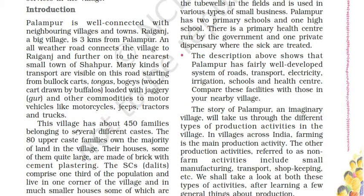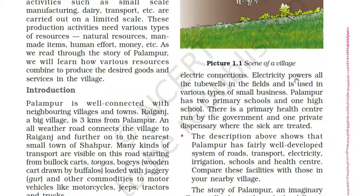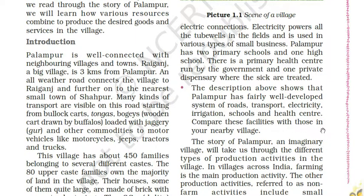This village has about 450 families belonging to several different castes. The 80 upper caste families own the majority of land in the village, with large brick and cement houses. The Dalits, comprising one third of the population, live in one corner of the village in much smaller houses, some of mud and straw. Most houses have electric connections. Palampur has two primary schools, one high school, a government primary health center, and one private dispensary. Palampur has fairly well-developed systems of road transport, electricity, irrigation, schools and health centers.